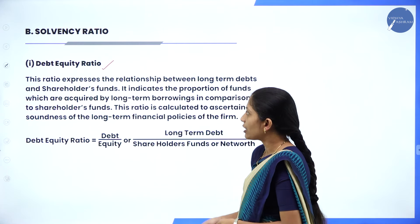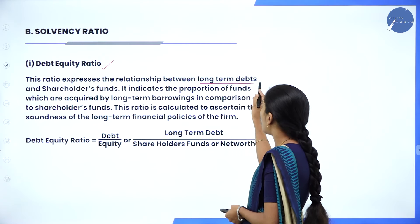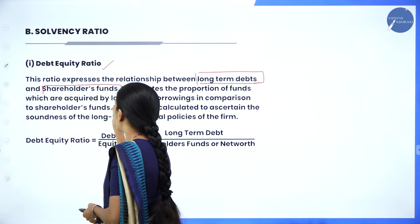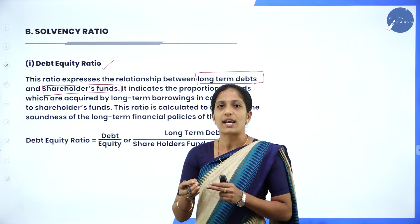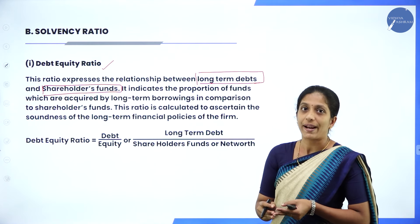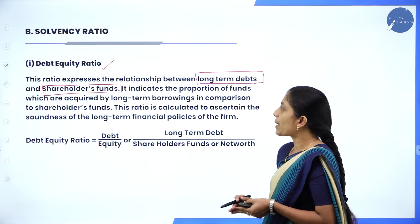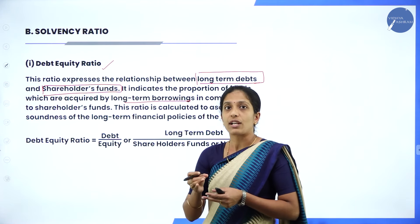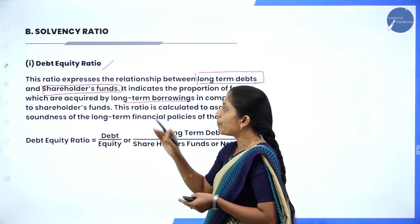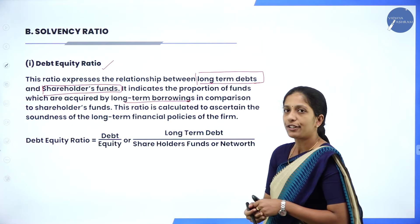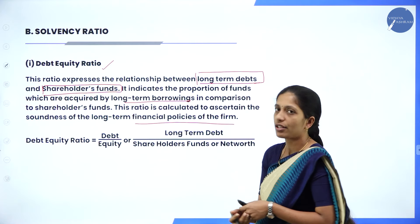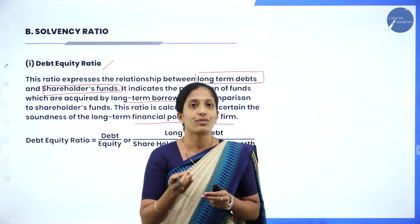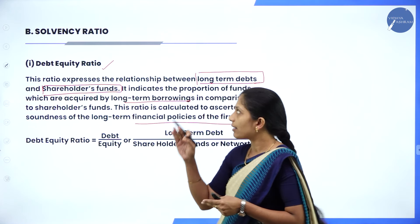Debt equity ratio expresses the relationship between long term debt and shareholders fund. Shareholders fund is also called equity. It indicates the proportion of funds acquired by long term borrowings in comparison to shareholders fund. This ratio is calculated to ascertain the soundness of the long term financial policies of the firm.